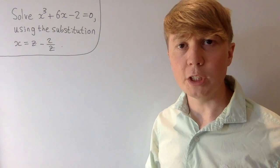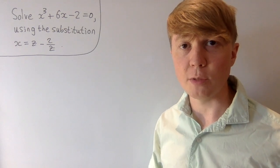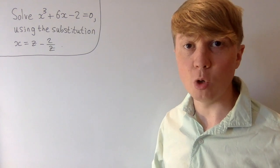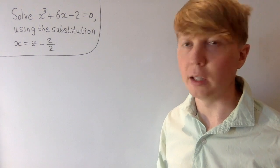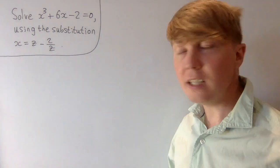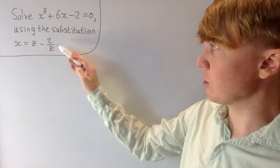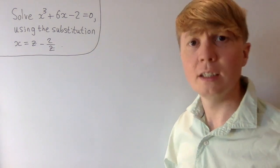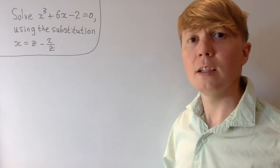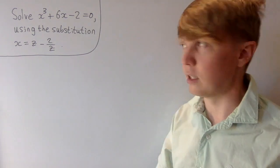We're going to look at a nice way of solving cubic equations using a clever substitution method. We'll have a look at how and why this method works more generally, but first we'll go through this example in full. The idea is that we replace our variable x with z minus 2 over z, then we'll solve the equation to find what z needs to be, and this will tell us what our solutions in x need to be.